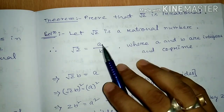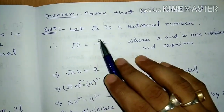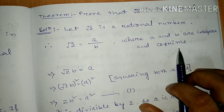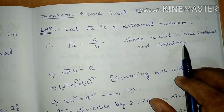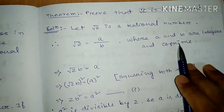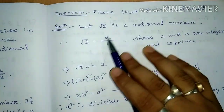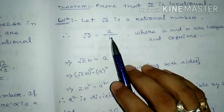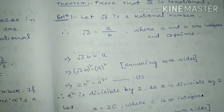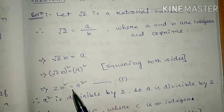If it is a rational number, we can express it in A by B form. So root 2 equals A by B, where A and B are integers and co-prime. Co-prime means they have only 1 as a common factor — no other common factor. Now multiply both sides by B: root 2 times B equals A. Taking the square of both sides: root 2 B whole squared equals A squared, giving us 2B squared equals A squared.